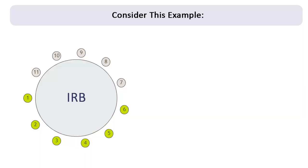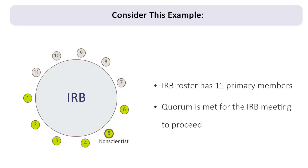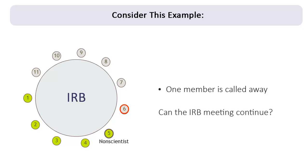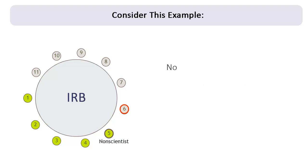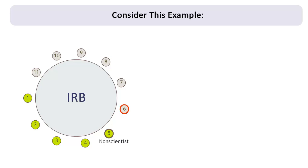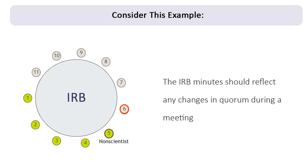Consider this example. At today's meeting, 6 of the 11 primary members are present, including a non-scientist. Quorum requirements are met because a majority of members are present, including a non-scientist. Halfway through the meeting, one of the members is called away to handle a medical emergency. Can the IRB meeting continue? No, the quorum is lost because 5 is not more than half of 11. All IRB activity must stop until the quorum is restored. The IRB minutes should reflect when quorum is lost in a meeting and when it is restored, if it is.